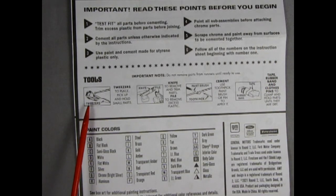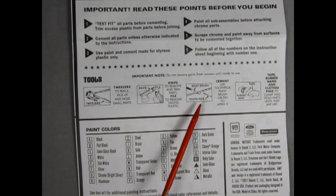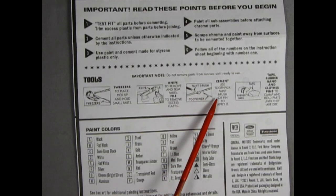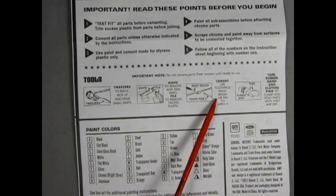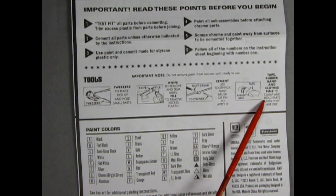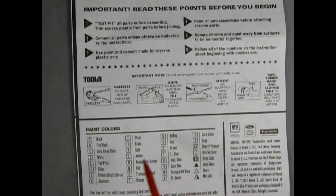So down here we've got tools there's tweezers, a knife, paintbrush and a toothpick for cement, a paintbrush for paint, and then tape and rubber band to hold small parts together. And then we have our paint chart down here.